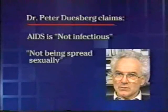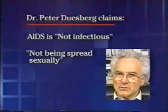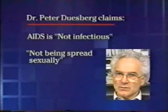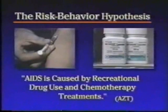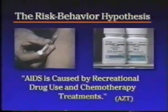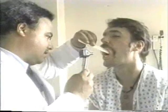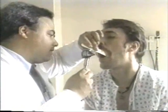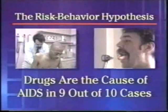To begin with, Duesberg argues that AIDS is not infectious. It is not being spread sexually, and it is not a threat to the public at large. He and journalist John Lawrenson have proposed that AIDS is caused by recreational drug use and AZT. Psychic drugs used by homosexuals as aphrodisiacs and injected drugs like heroin and cocaine, they claim, are the direct cause of AIDS in 9 out of 10 cases.